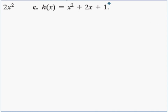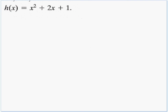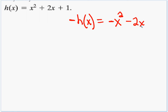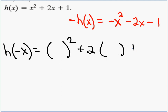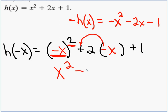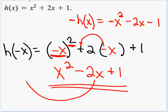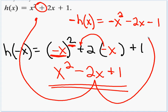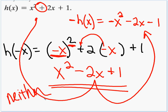For letter c, h of x equals x squared plus 2x plus 1. The negation is negative x squared minus 2x minus 1. Testing h of negative x: negative x squared becomes positive x squared; 2 times negative x gives minus 2x; and we have plus 1. That gives x squared minus 2x plus 1. This doesn't match the original, and it doesn't match the negation — two of the signs are off. So it's not even, it's not odd — it's neither.